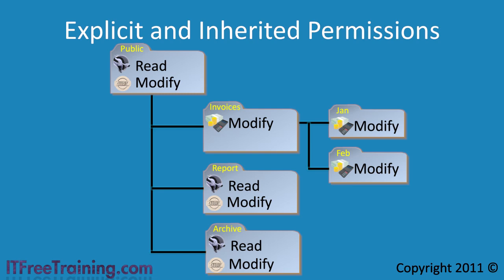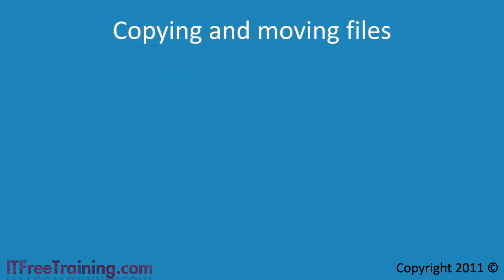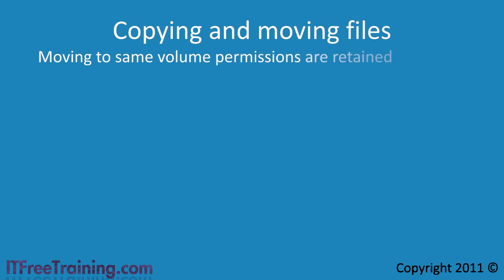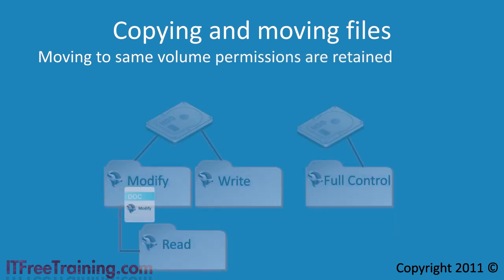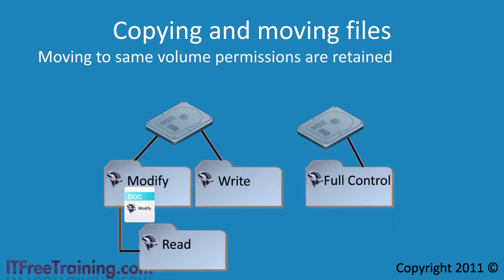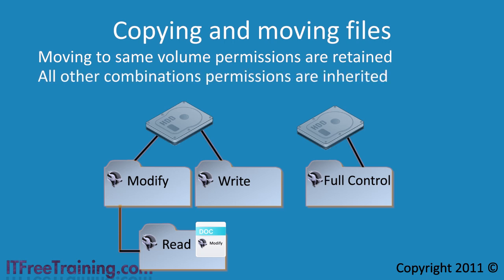This brings up the next topic: copying and moving files. What happens if you move or copy a file from one location to another? If you move a file from the same volume to another location on the same volume, the permissions are kept — the file will retain its explicitly set permissions. This is the only time this happens. All other combinations will cause the file to inherit the permissions of the folder where it is being copied to.